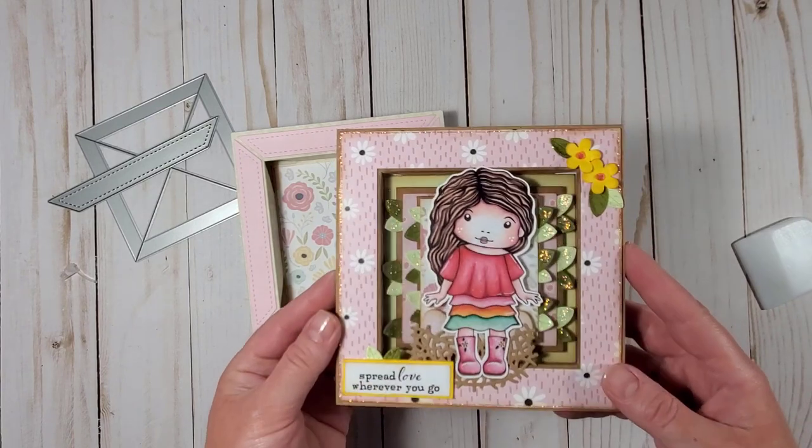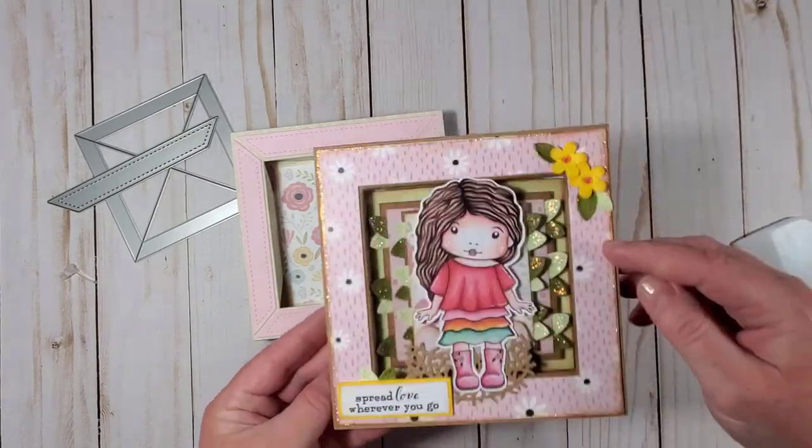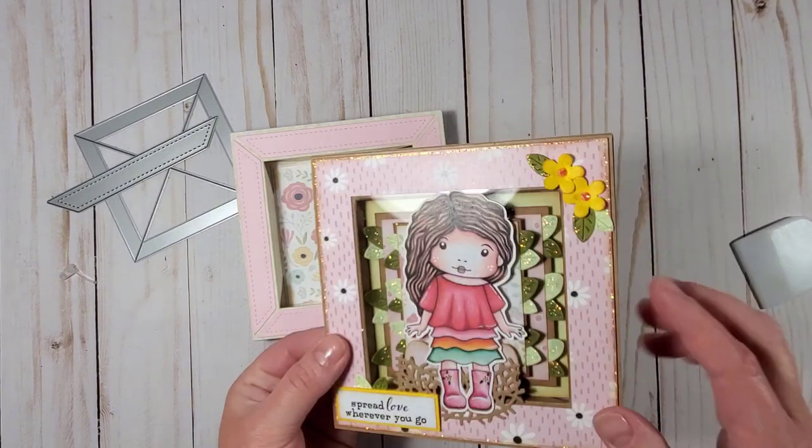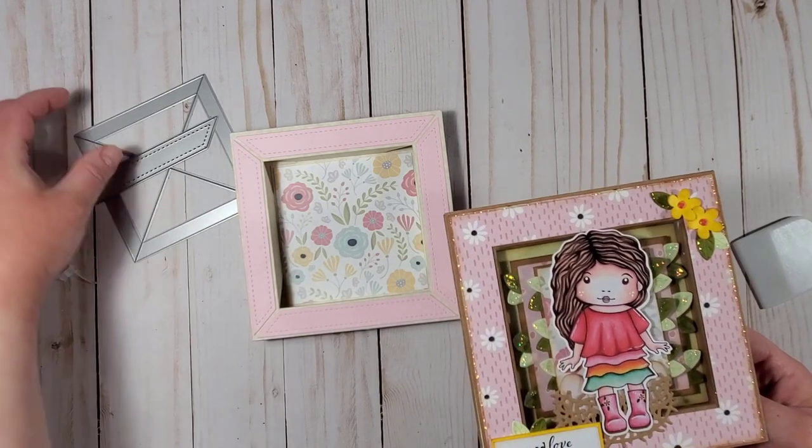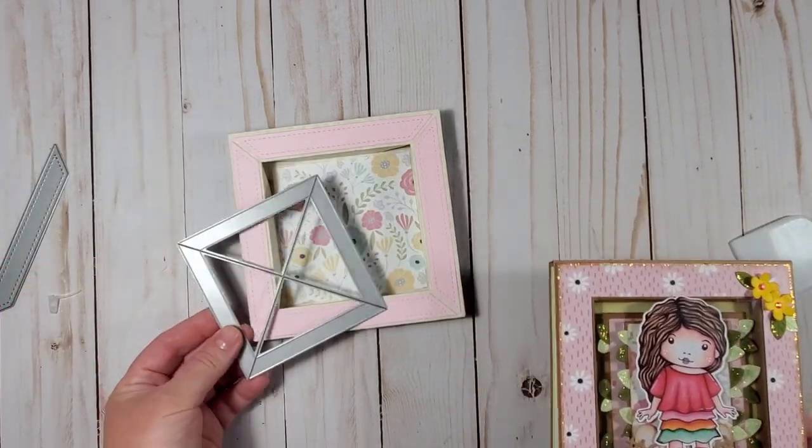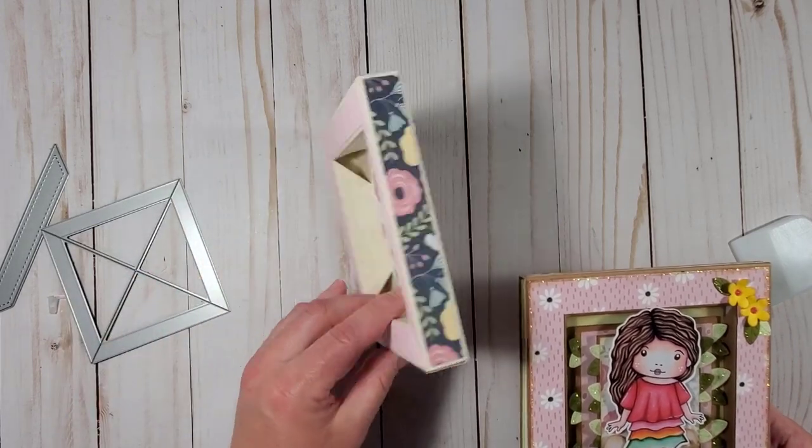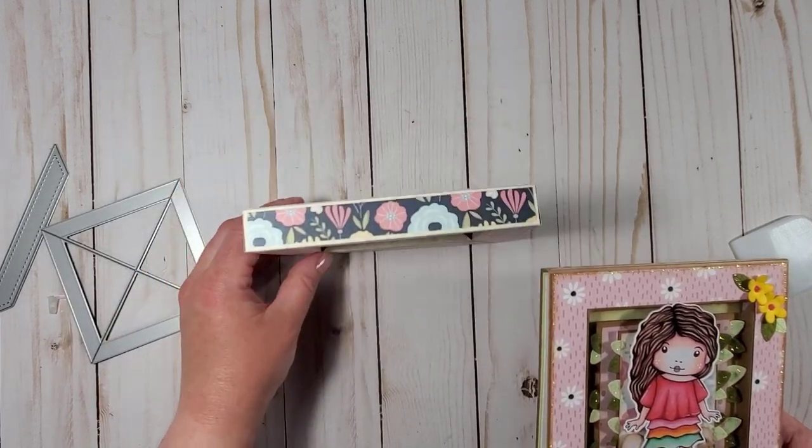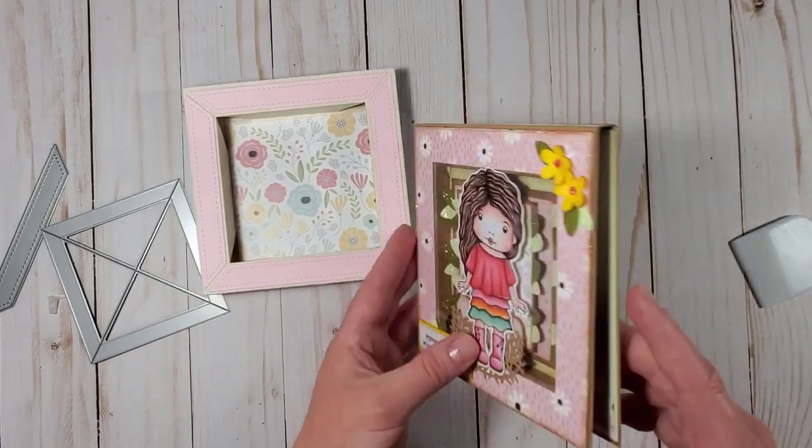I previously created this card, this is just a card with a shadow box in it and I also used the same die that we used today for creating the shadow box which is closed from all the four sides because on this card you see this is how I had it here so only if this section is closed all around.